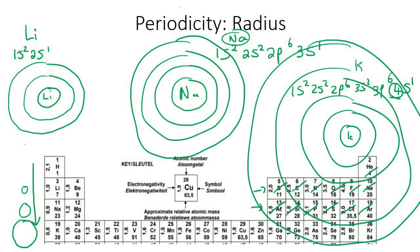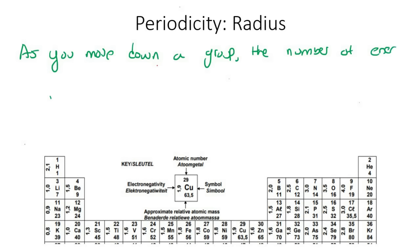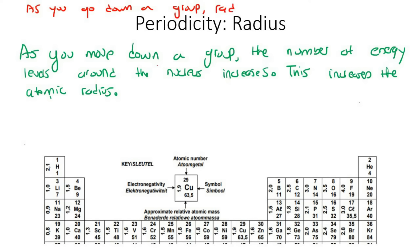As you move down a group, the number of energy levels around the nucleus increases. This increases the atomic radius. To summarize: as you go down a group, radius increases.